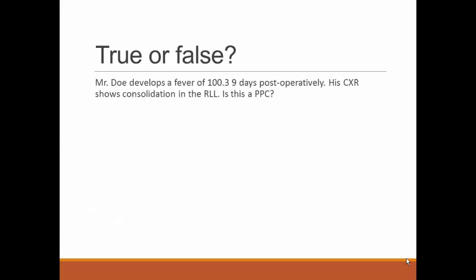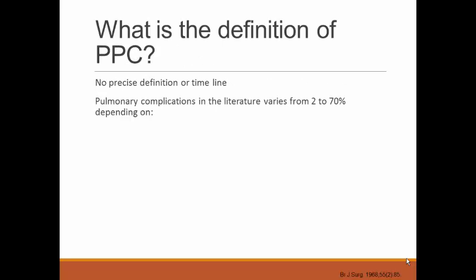Another question: Mr. Doe develops a fever of 100.3 nine days postoperatively, and his chest x-ray shows consolidation of the right lower lobe. Is this a postoperative pulmonary complication? Yes, it is. The reason this is worth asking is that there's actually no precise definition of a postoperative pulmonary complication. In the literature, the range goes from 2 to 70 percent, depending on patient selection, the procedure performed, and what was defined as a complication — whether it's just pneumonia, re-intubation, prolonged ventilation, or atelectasis.